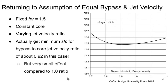Now, if we keep that fan pressure ratio fixed and go back to our assumption of equal bypass and jet velocities, what we see is that we actually get a minimum in specific fuel consumption for a bypass-to-core jet velocity ratio that's not 1 — it's a little bit lower than that, at 0.92. This is a small effect compared to the value of 1, just a 1 to 2% change in specific fuel consumption, but that matters for aircraft.